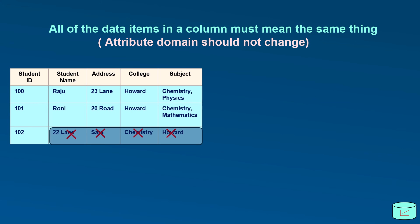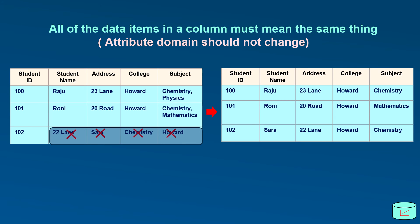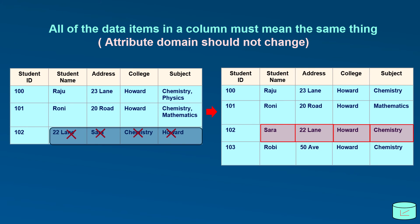In this right side table, fill values in a column mean the same thing. Now attribute domain did not change here.